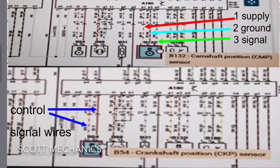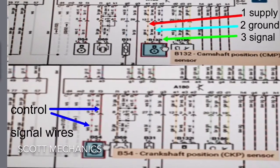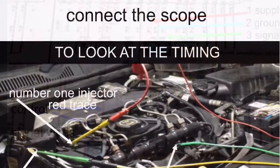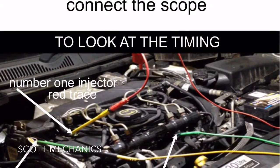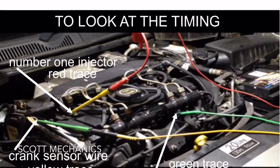This is the wiring diagram for the camshaft sensor and the crankshaft sensor. We've connected our scope to the signal wire on both the camshaft and the crankshaft sensor.